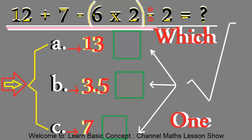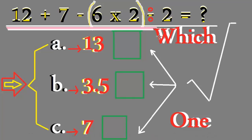Hello everyone, happy to see you again. Today I want to show you about smart street solving, fast and easy for you to understand. The topic is: 12 plus 7 minus open bracket 6 divided by 2 close bracket, times 2, equals what? There are three choices: A the answer is 13, B the answer is 7.5, and C the answer is 7.